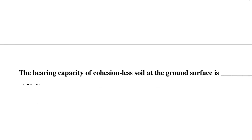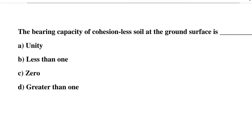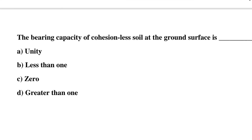Next question: the bearing capacity of cohesionless soil at the ground surface is — Option A: unity, Option B: less than 1, Option C: 0, Option D: greater than 1. The correct answer is Option C, 0.